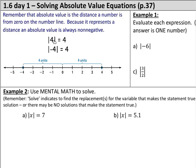An absolute value, in case you haven't heard of this before, tells us a distance. An absolute value is the distance of a number from 0 on the number line. So the absolute value of 4 equals 4, because if I look at the number 4 on the number line, it is 4 units away from 0.